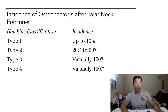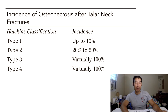In Type two, there is a fracture at the talus and it is dislocated at the subtalar joint. The incidence of avascular necrosis is 20 to 40 percent — a substantial jump from Type one — because now two blood supplies of the talus are interrupted: the dorsalis pedis and the medial and lateral arteries of the talar body, which are the artery of the sinus tarsi and the tarsal canal.